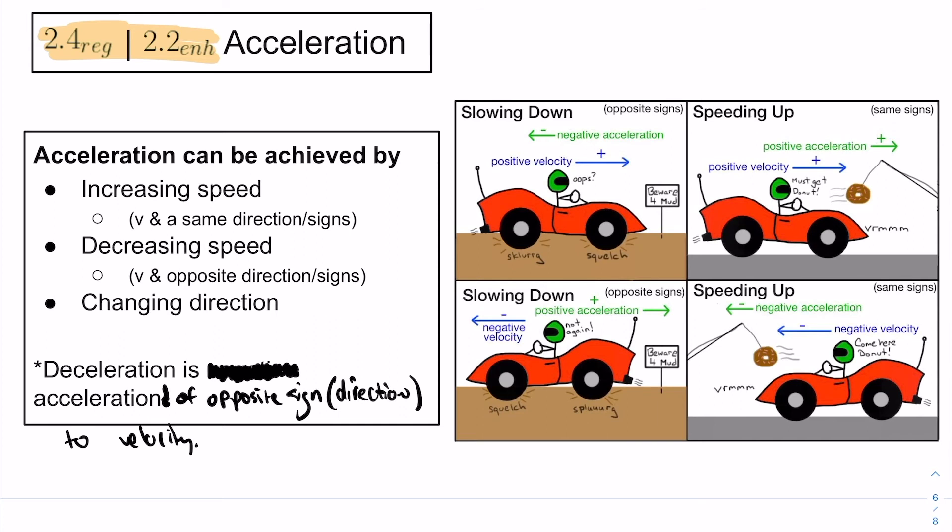So, how do we get change in velocity over time? We have three ways: changing speed, increasing speed, changing directions. If you have an acceleration and a velocity that are going in opposite directions, remember we show direction with plus and negatives, then you're slowing down.